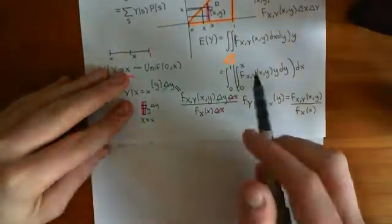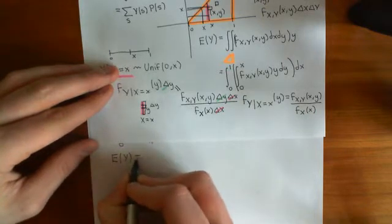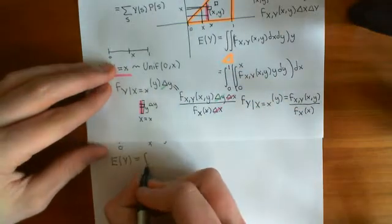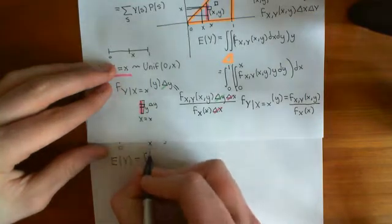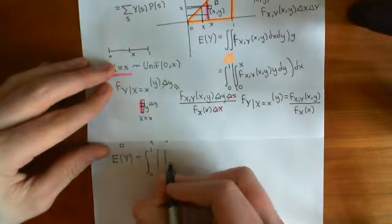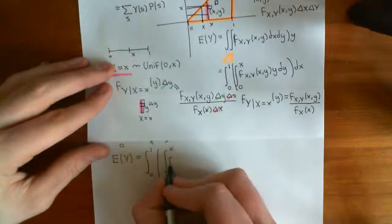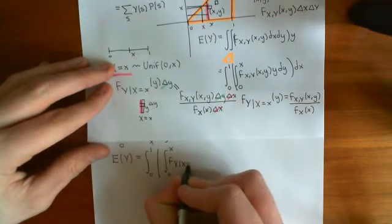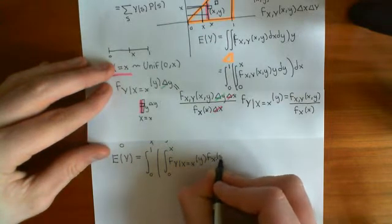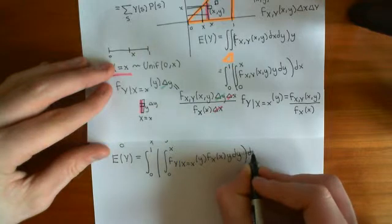So if we want this expected value of Y, it's going to be — substituting in place of the joint PDF what we've now found — the integral from 0 to 1 of the integral from 0 to x of the conditional PDF of Y given X equals x, evaluated at little y, times the marginal PDF of X evaluated at little x, times the value y, dy, and then dx outside.